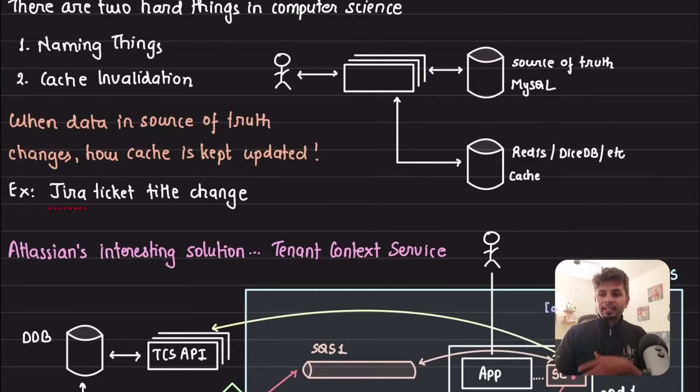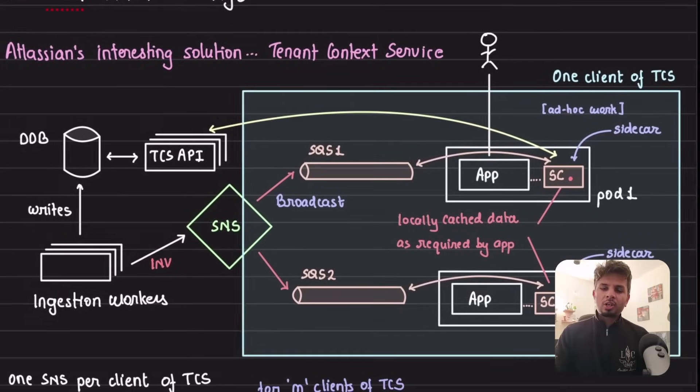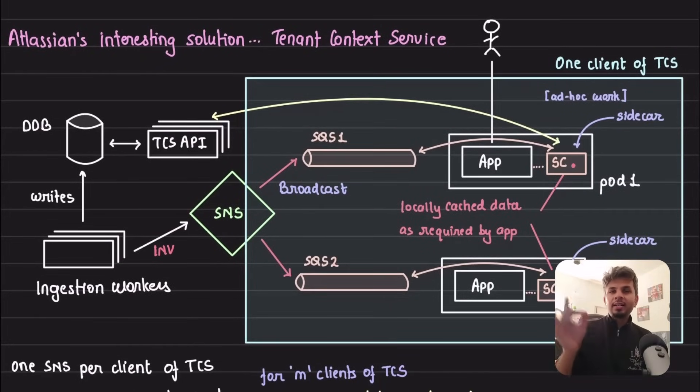This entire thing is in the context of a service at Atlassian called Tenant Context Service. The diagram looks scary, it's not - it's pretty simple, I'll explain it step by step. This is a tenant context service which has its own source of truth, which is DynamoDB. It has some sort of ingestion workers doing writes into this DynamoDB. Consider this TCS API - the tenant context service API - that whoever wants to know about the tenant metadata talks to this API.